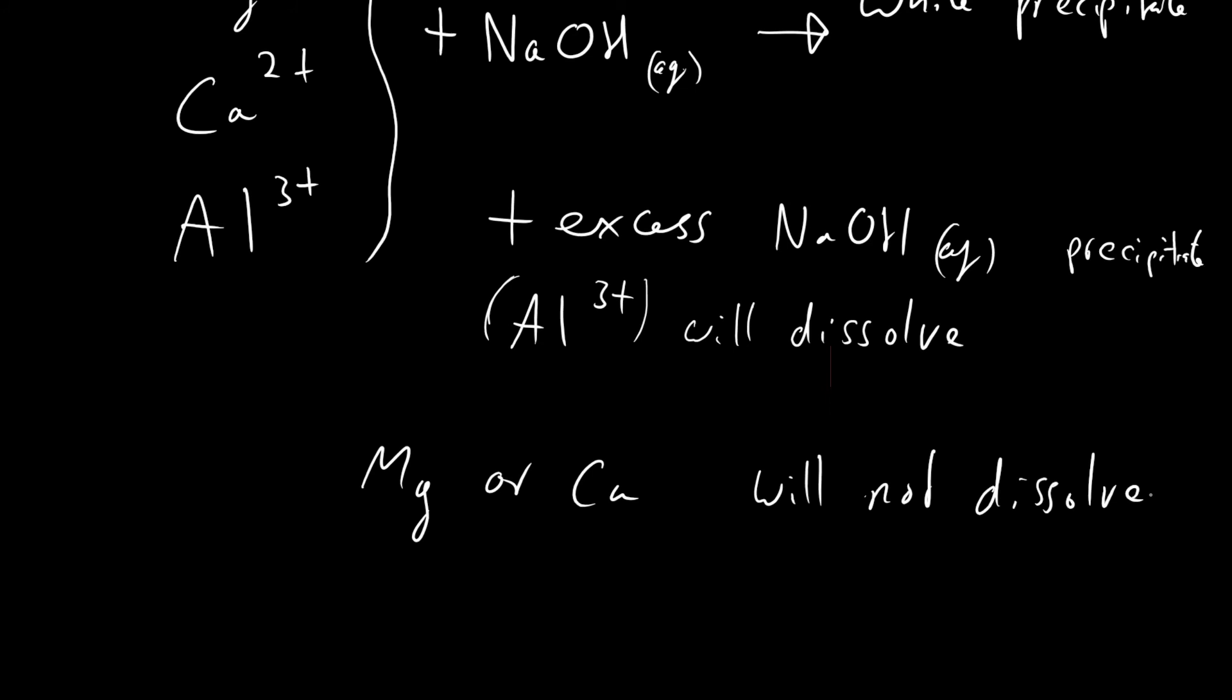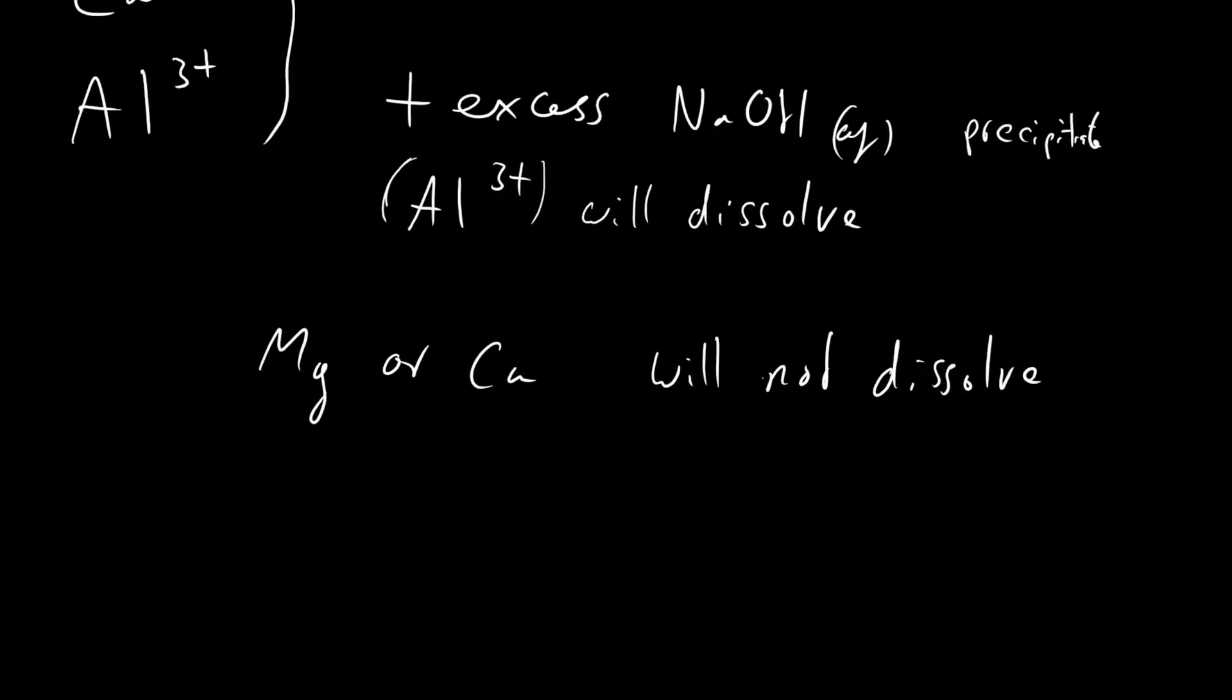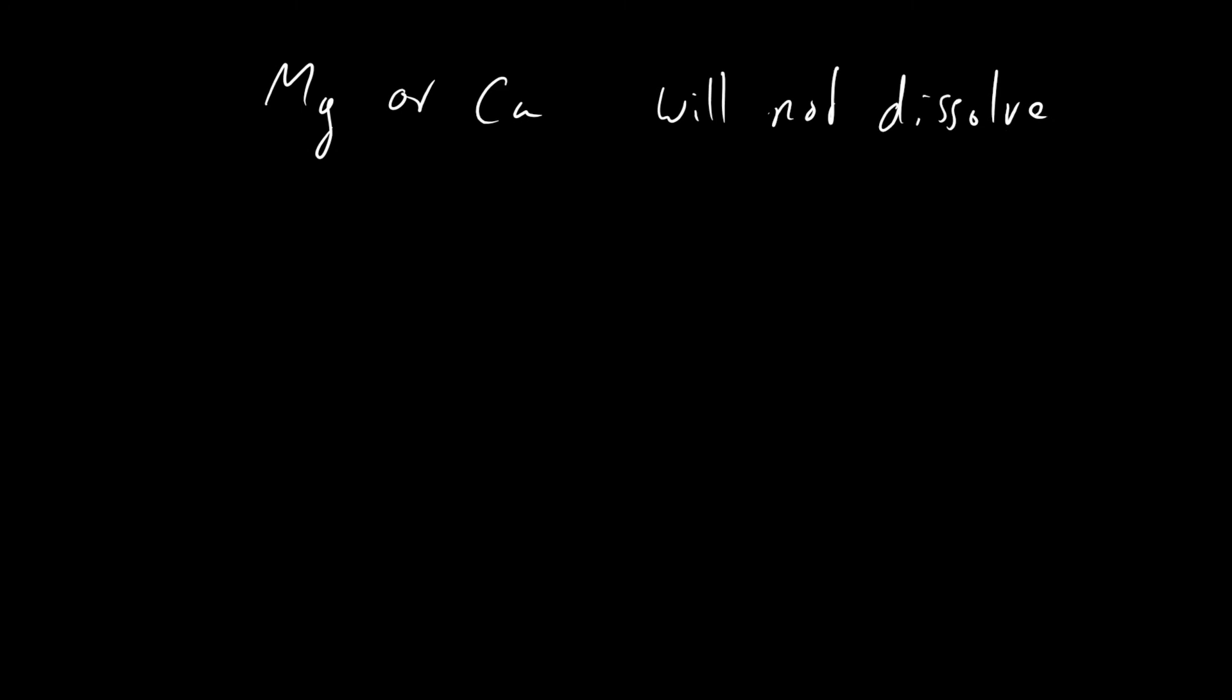If it does not dissolve, it wasn't aluminum—it must have been magnesium or calcium. Lastly, we need a way of distinguishing between these two.